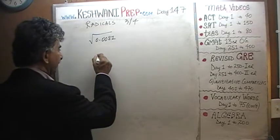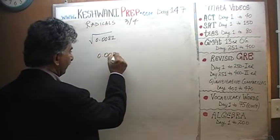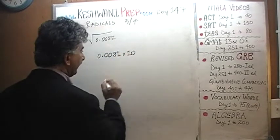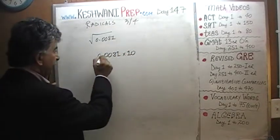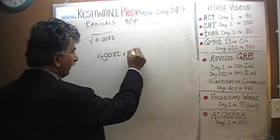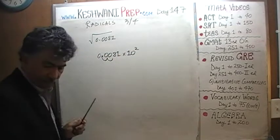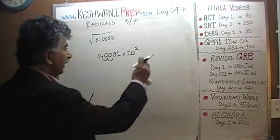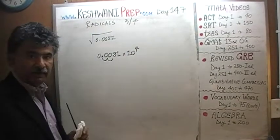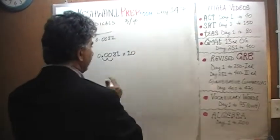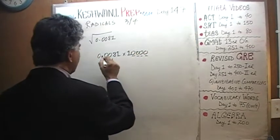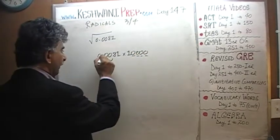That's very simple. We take our 0.0081 and if you were to multiply it by 10, the decimal will move one place. If you multiply it by 100, it will move to the second place. If you multiply it by 1,000, it will move to the third place. And if you multiply it by 10,000 — 1, 2, 3, 4 — you will move the decimal four places.